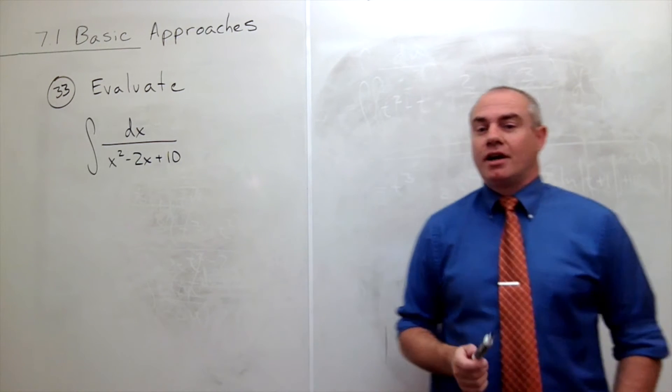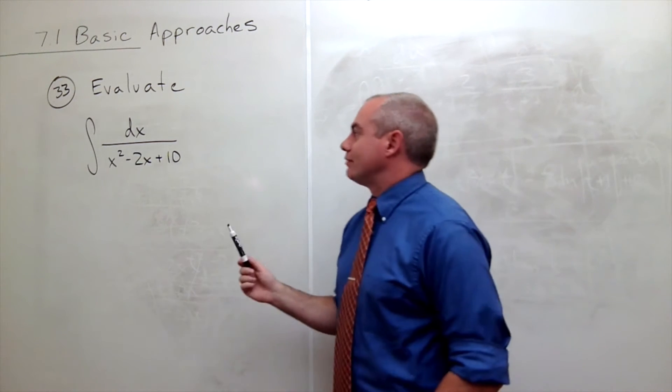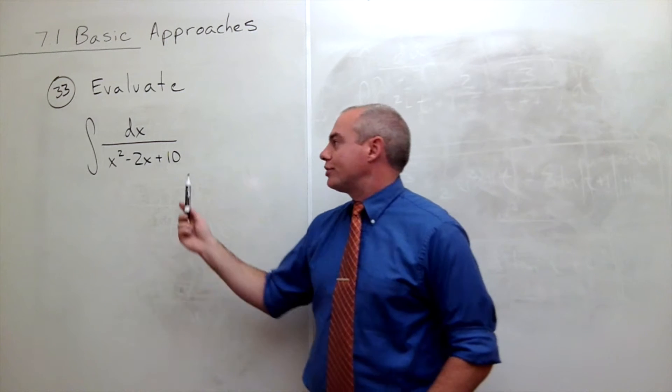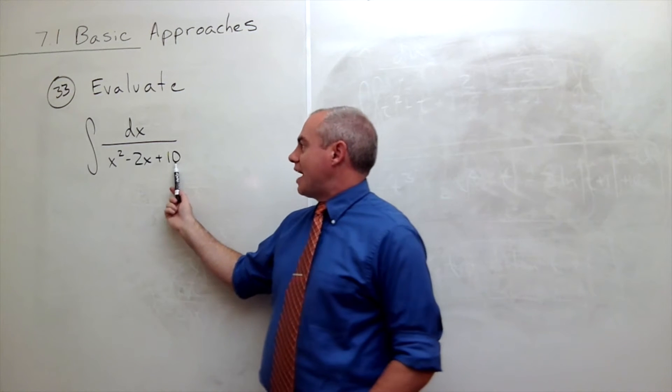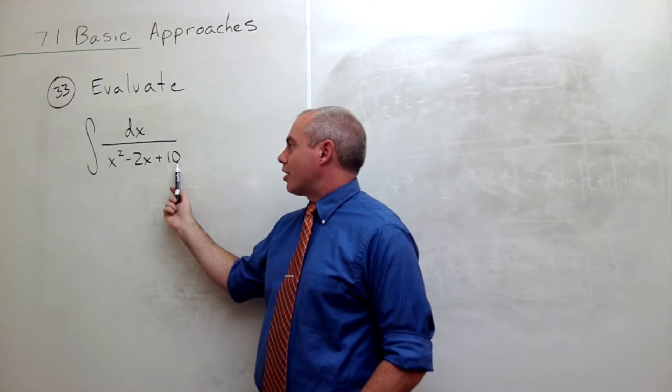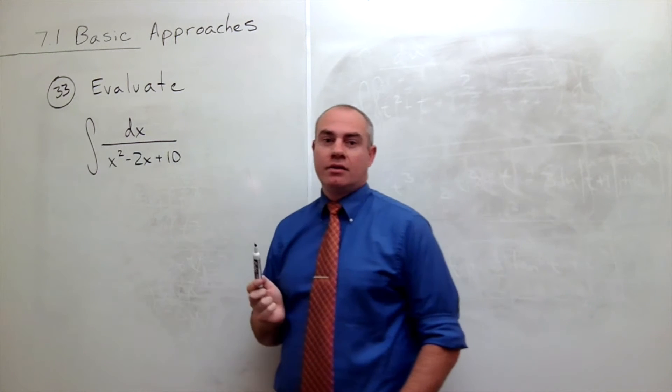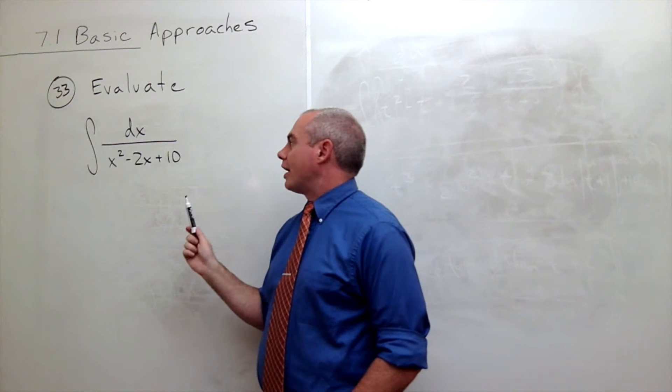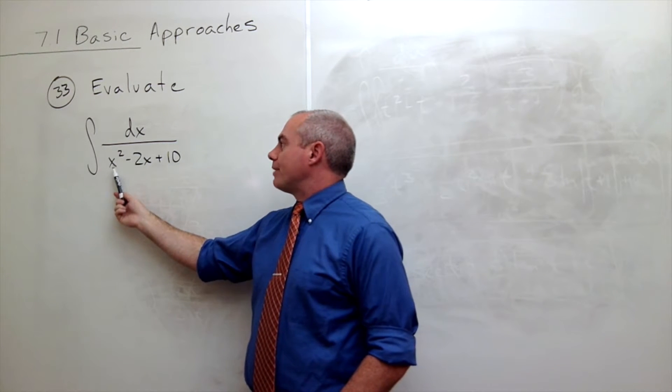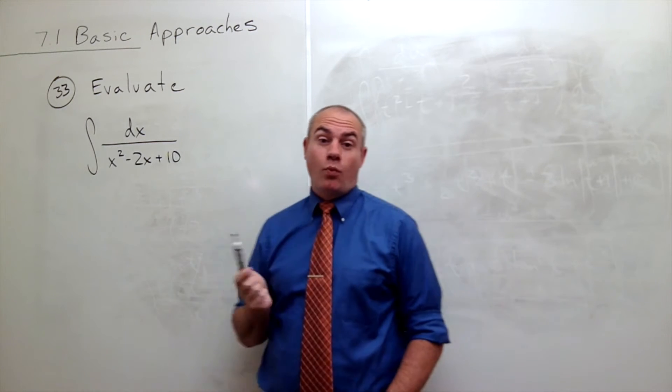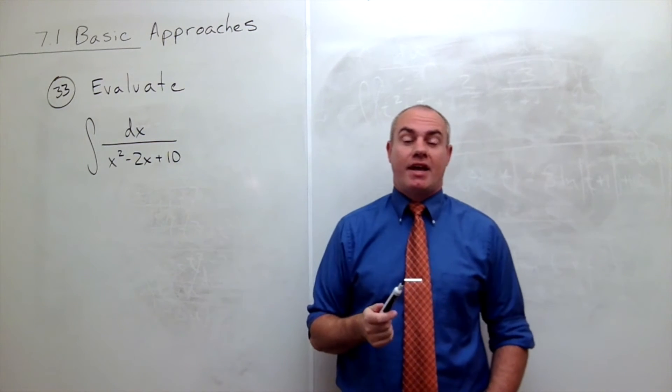The bottom of this fraction could be nicer for us, unfortunately this 10 is kind of causing us problems. This is almost a perfect square on the bottom, but not quite, because the perfect square would be x squared minus 2x plus 1, but we have plus 10.